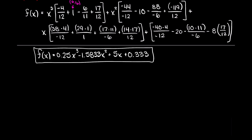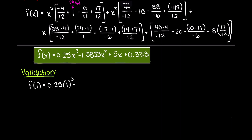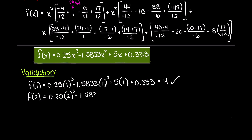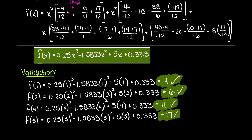As you can see, after grouping our common terms, we are left with a final interpolation function of 0.25x cubed minus 1.5833x squared plus 5x plus 0.33. Now if you want to do a quick check by plugging our x terms into our Lagrange polynomial, remember that when we are interpolating our function, it needs to pass through all of our given data points. Therefore, by plugging in our x terms we need to get our y terms back. If we do not, that means we made a mistake at some point in our calculations. As you can see, we are returned our outputs as expected.